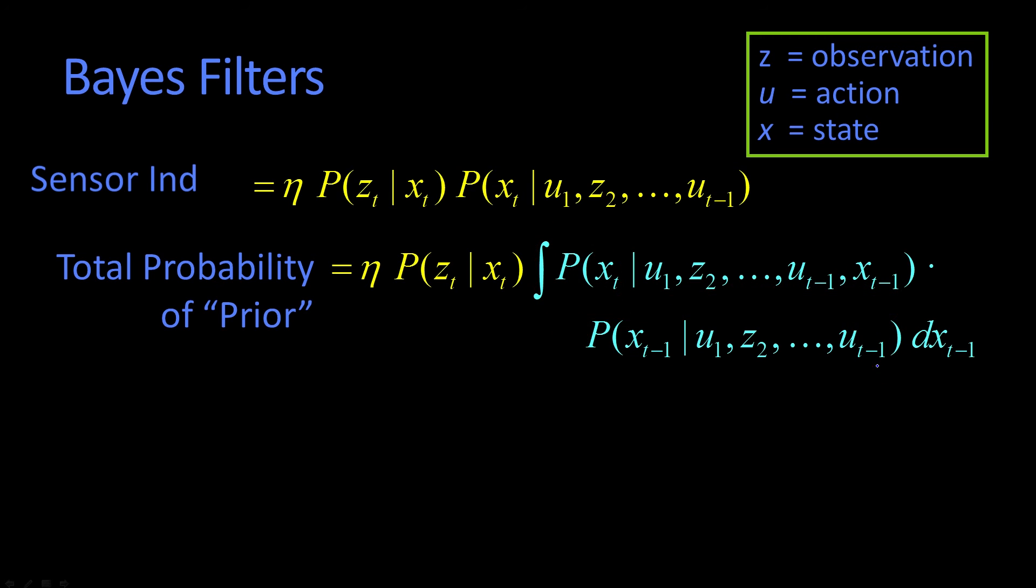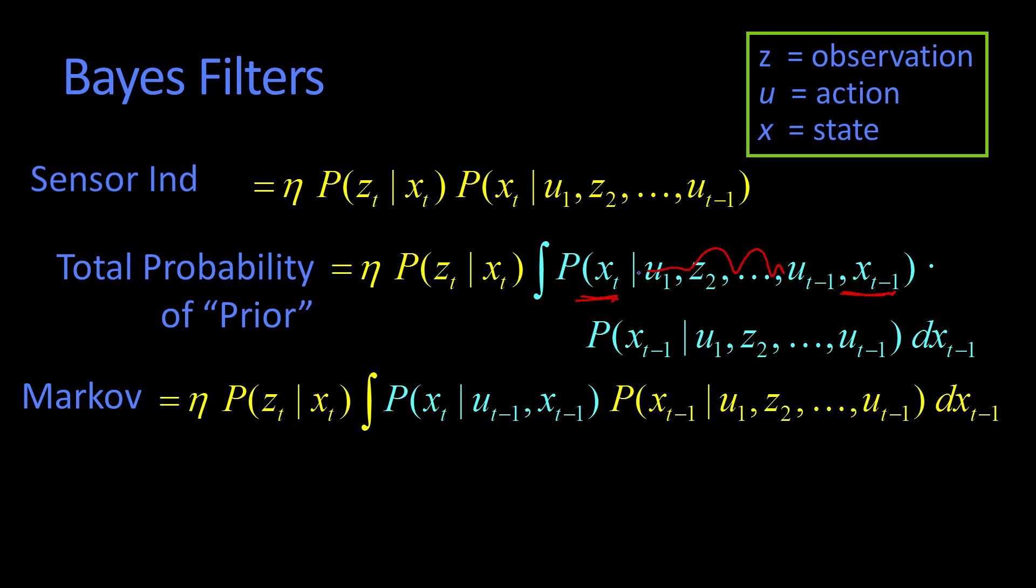But this value actually can get made much smaller, because notice that it has this term and that term. Because remember, the Markovian property says that if we have xt minus 1, and we want to predict xt, all this other stuff doesn't matter except the action. So basically, if you give me where I thought I was before, and what action you did, I can tell you about where I think I am now. And that's what this Markovian step is right there.